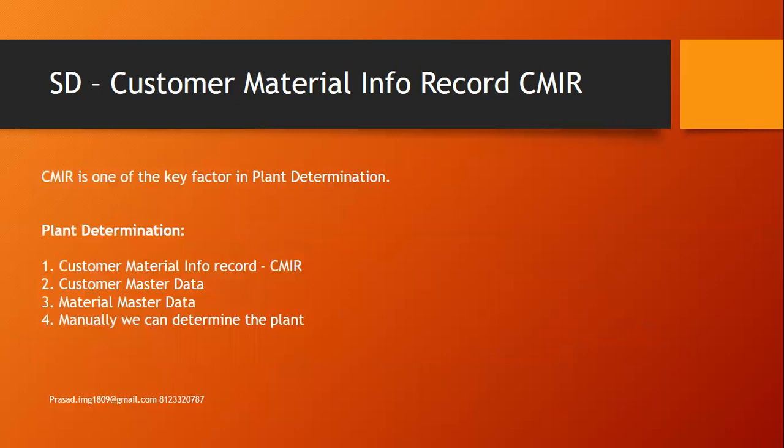The customer material information record displays a key factor in plant determination. During sales order creation, the system should automatically propose the plant based on system settings. If the delivering plant is maintained at the customer master data sales area data shipping tab, the system gives first priority. If it is not maintained in the customer material info record, then the system gives first priority to customer master data, then material master data. Otherwise, we can determine the plant manually. If all three areas have no delivering plant, the system gives high priority to the customer material information record.